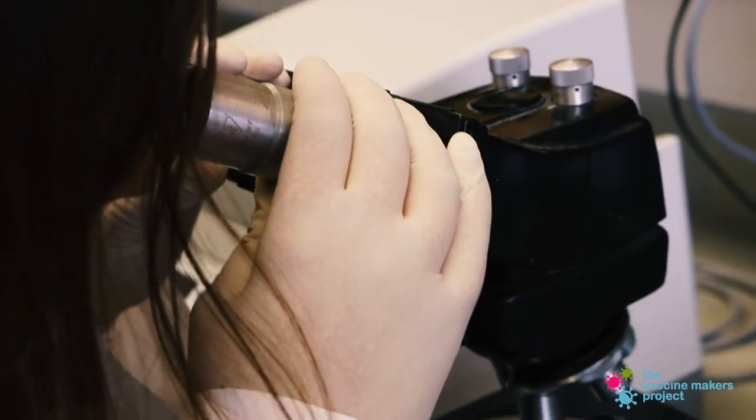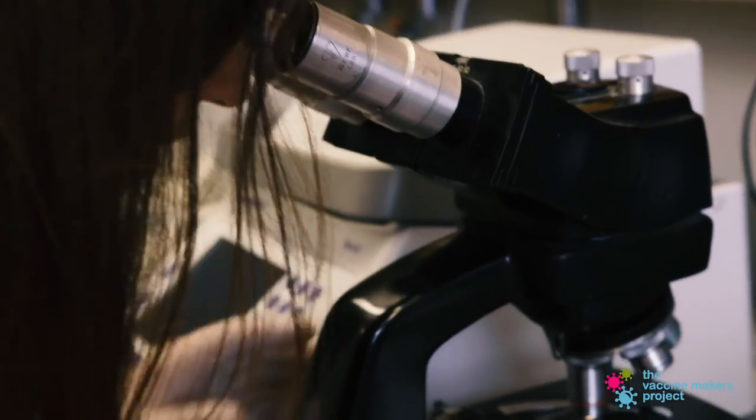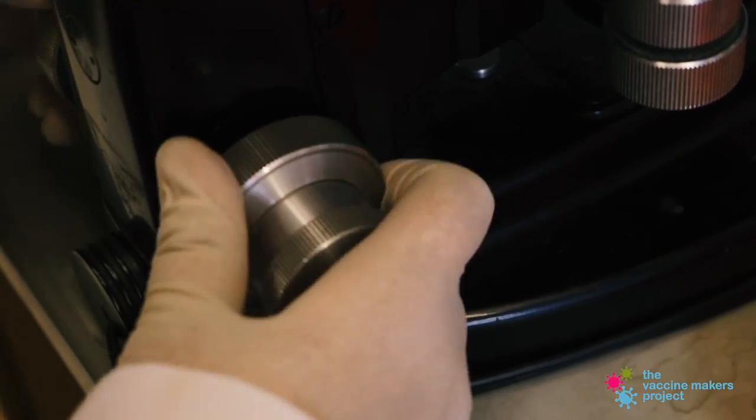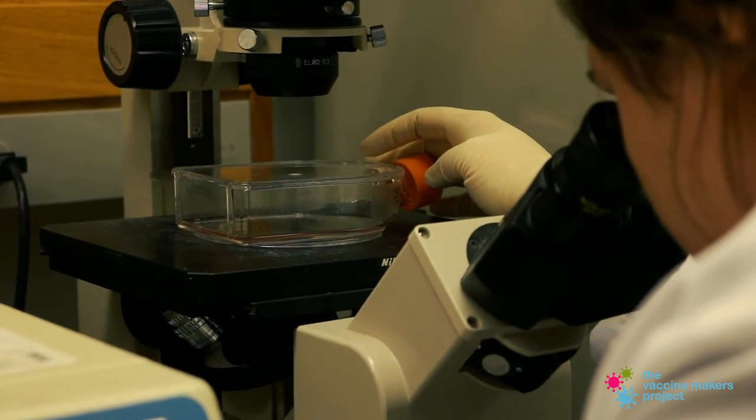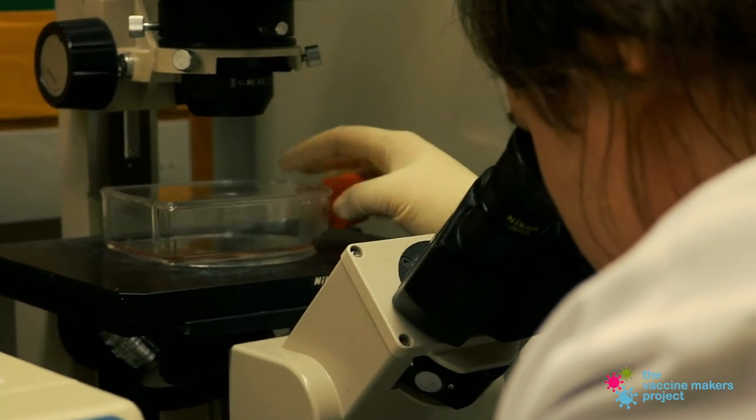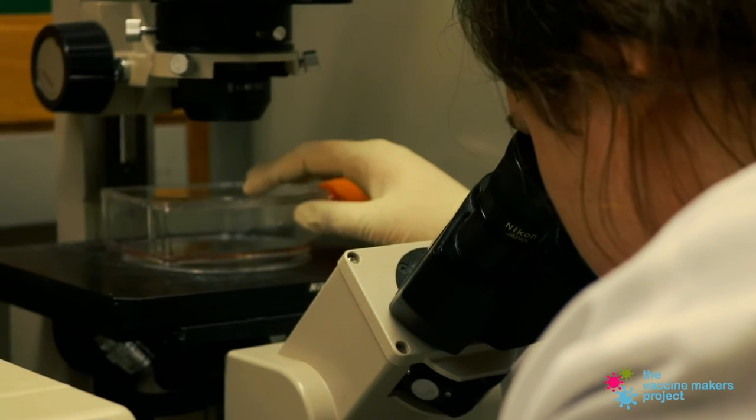Microscopes are really useful to look at cells when they're growing, which is important for me because I can see if they're healthy and if they're dividing the way that I want them to. And so a lot of my work centers around being able to culture human cells so that I can study them.